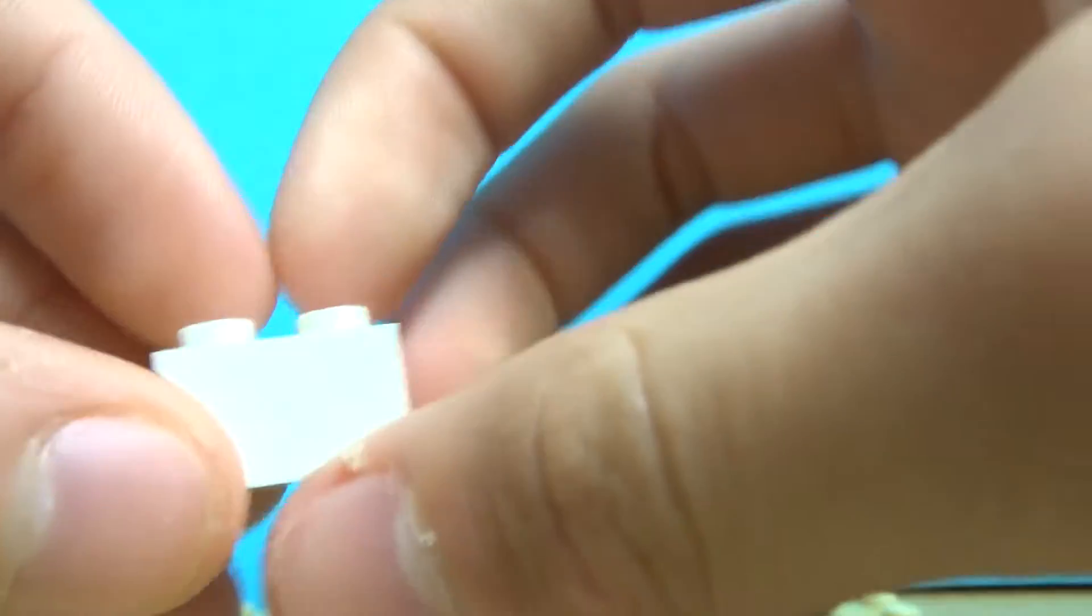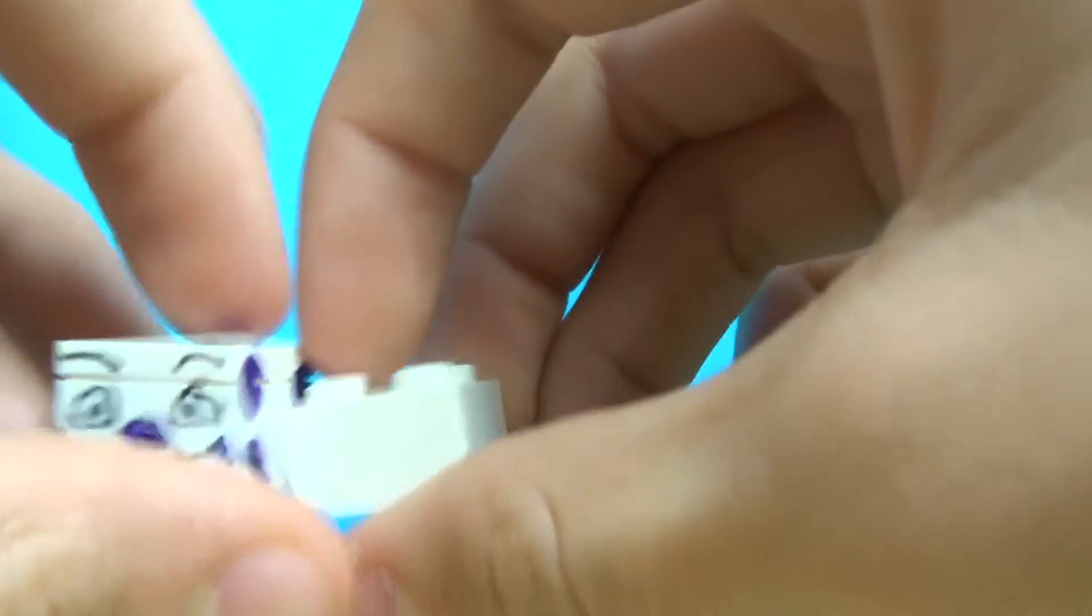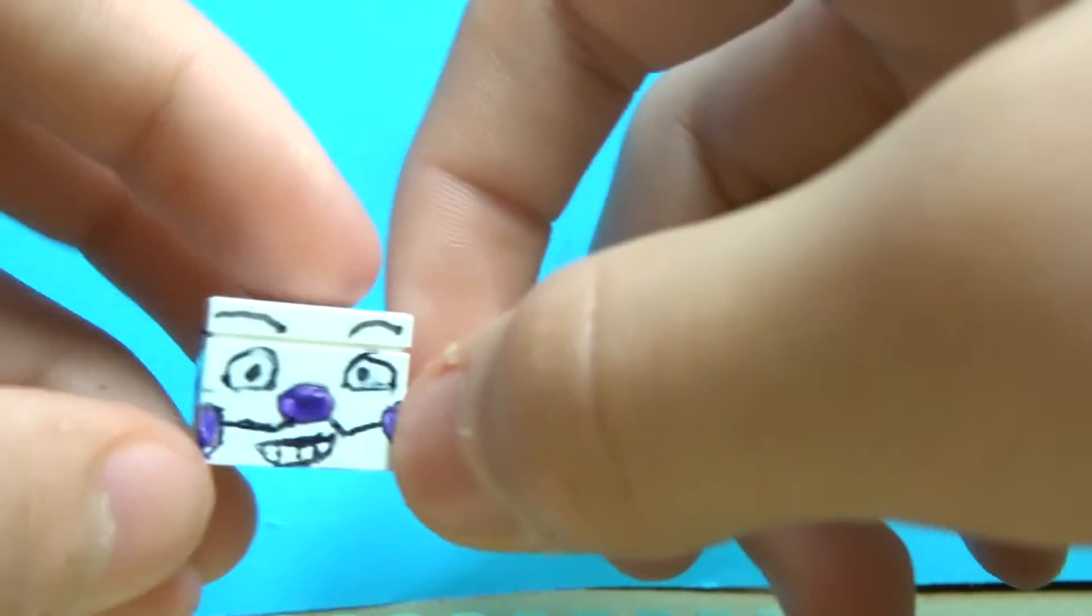King Dice's head is actually very easy to make. As you can see, you just need this part. You just draw the die on it, and then after that, you just have to draw his face on.